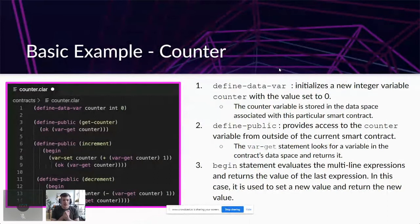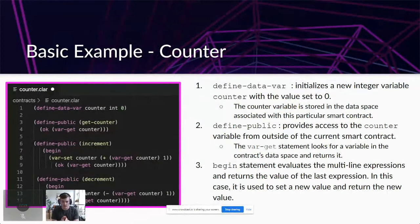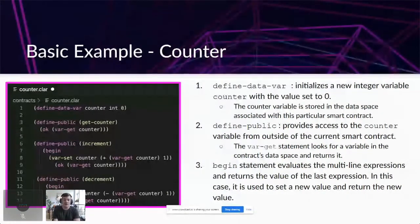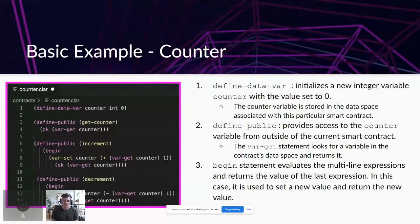Here's an example Clarity smart contract — 14 lines of code, not complicated at all. This tutorial is live on the Blockstack website. An integer is defined at the first line with define-data-var, initializing a new counter variable set to zero, stored in the data space owned by the smart contract. A public function gives access to the counter variable from outside the contract via var-get. The begin statement evaluates the multiline expression beneath it. This is a counter app with an increment function adding one and a decrement function subtracting one.